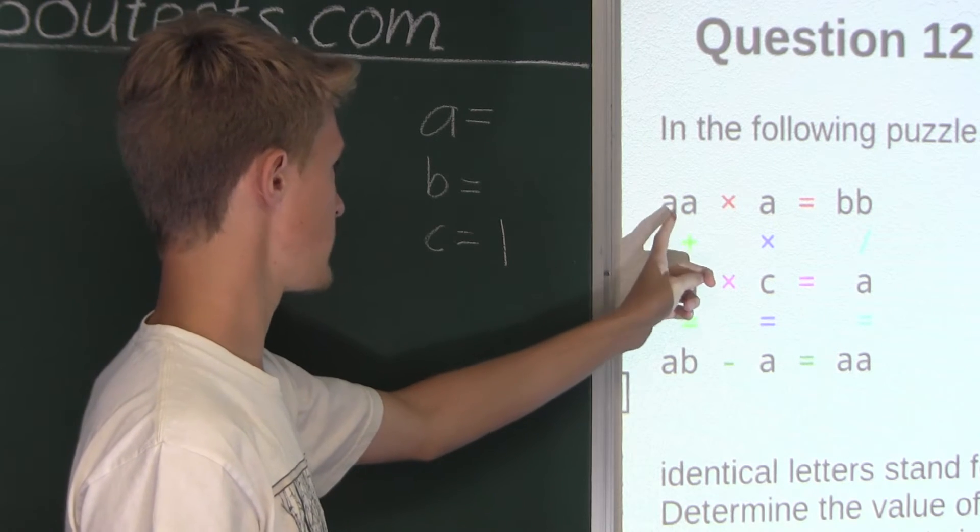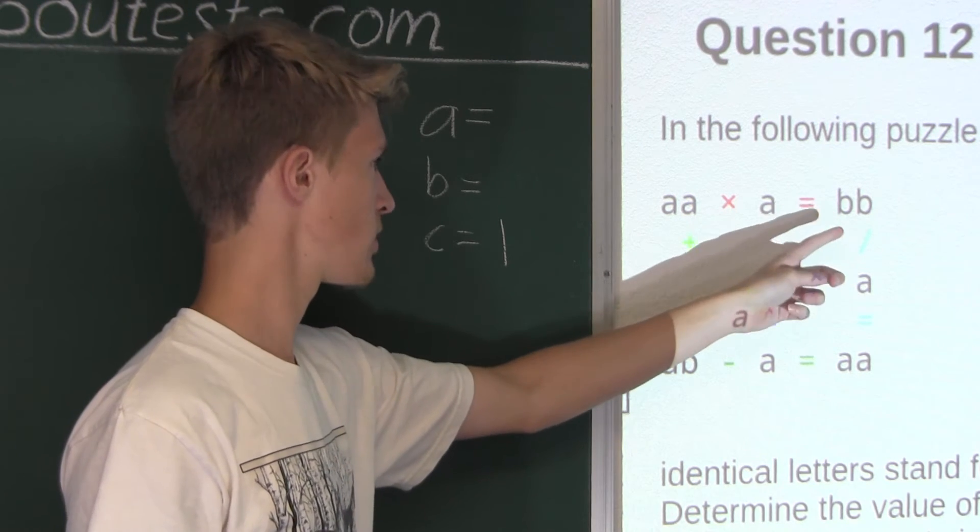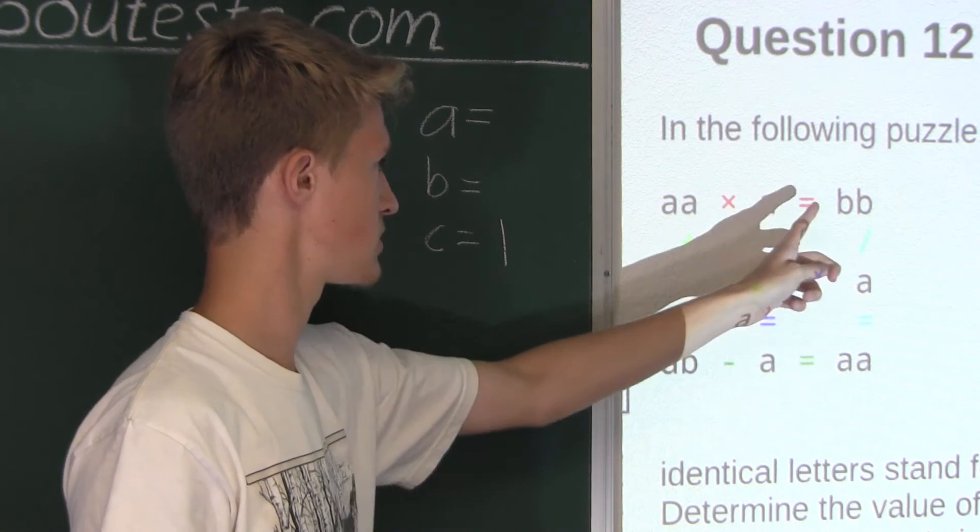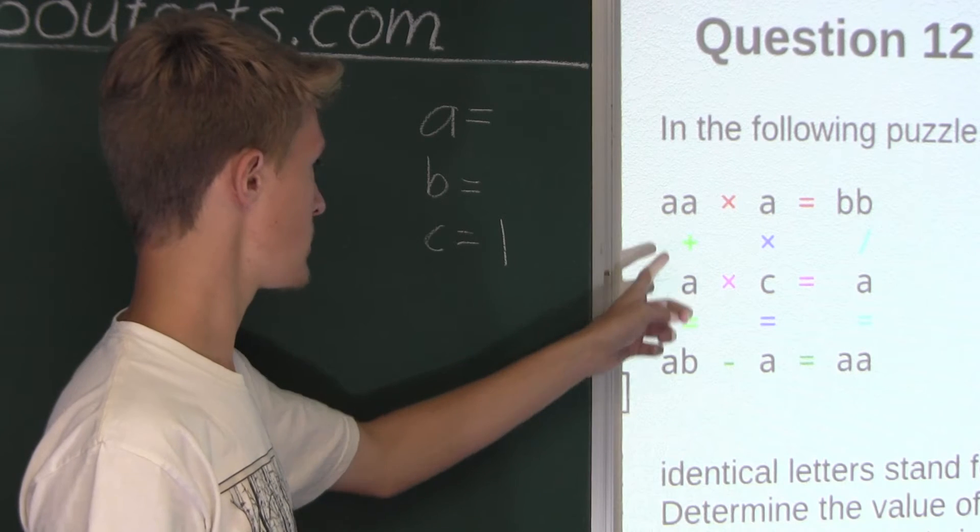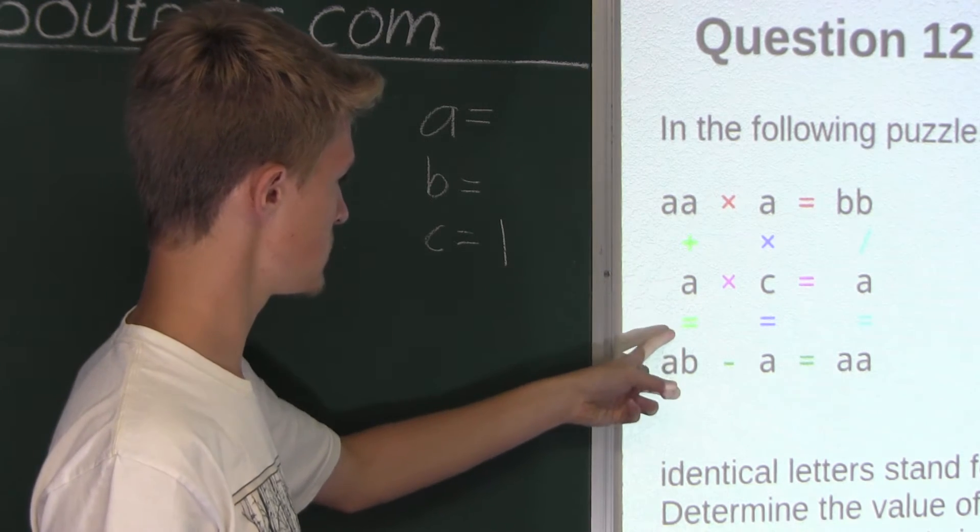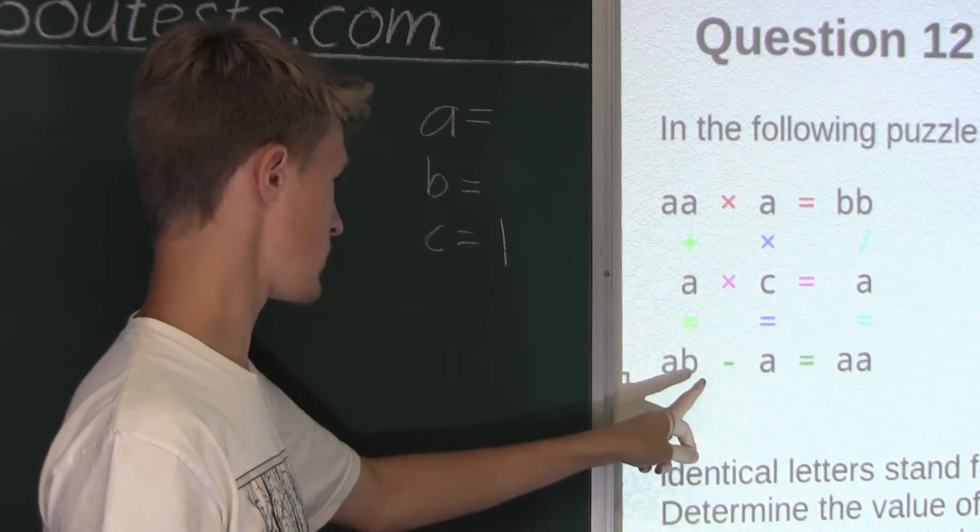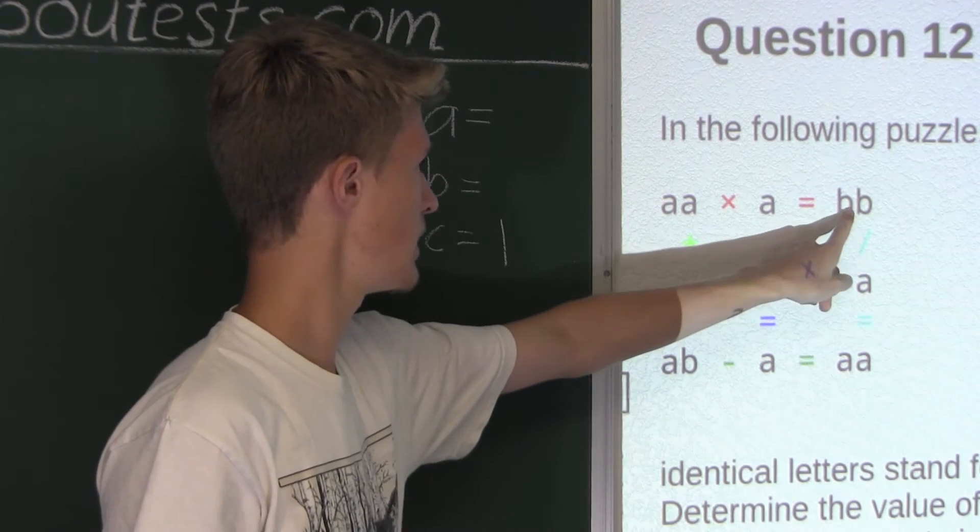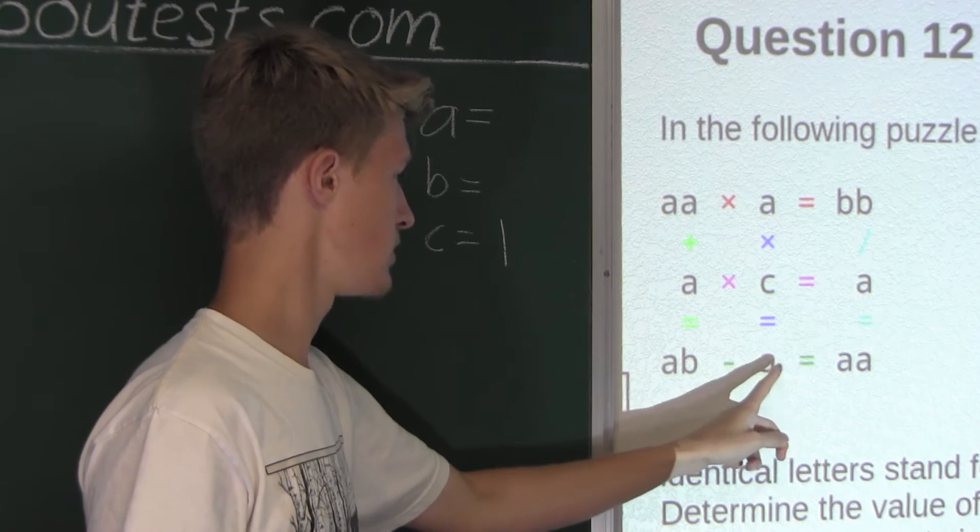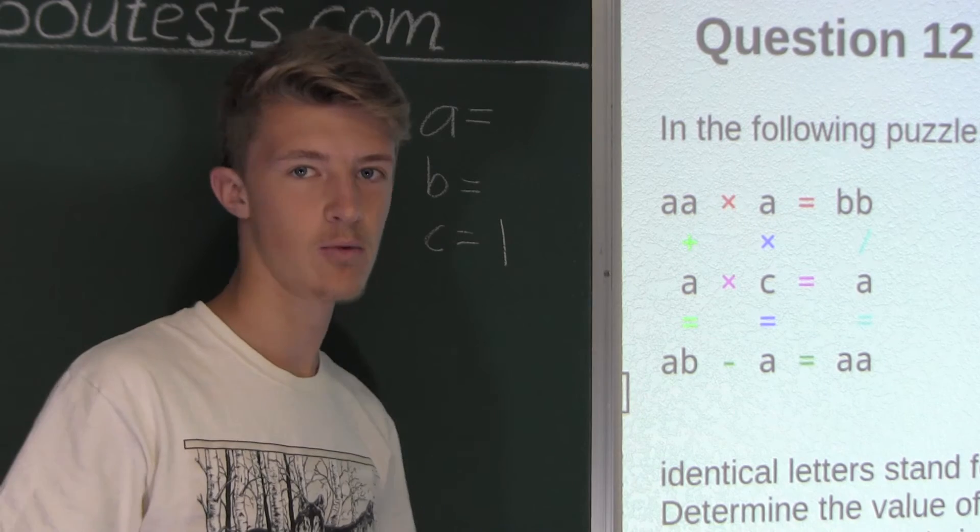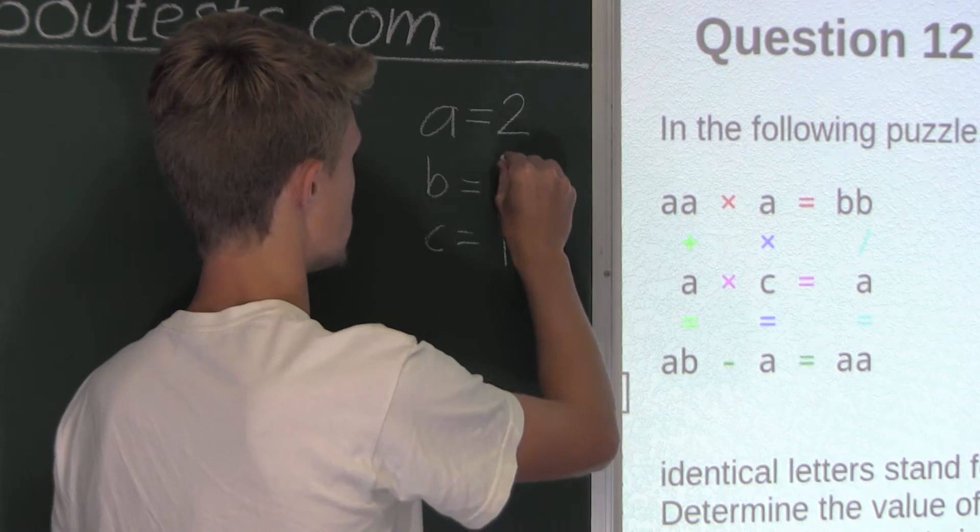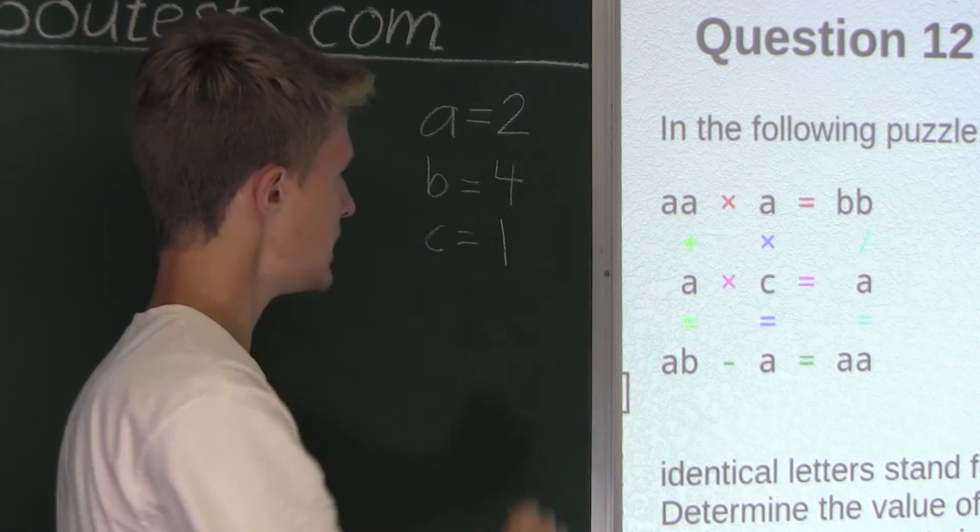Well, again, we have 22 times 2 is 44, which works. Then we have 44 divided by 2 is 22. It's just the same thing. But now here on the left equation, we have 22 plus 2 is equal to 24, which also works because B is 4, and we found that out earlier. And then 24 minus 2 is equal to 22. So therefore, that would work, and A would be 2, and B would equal to 4.